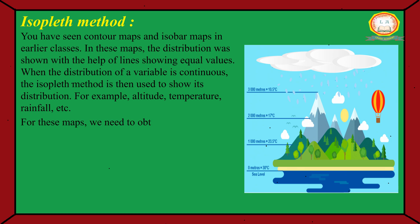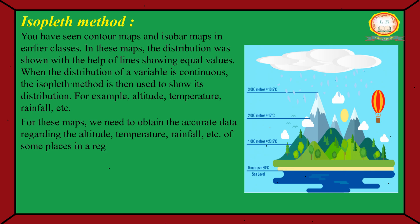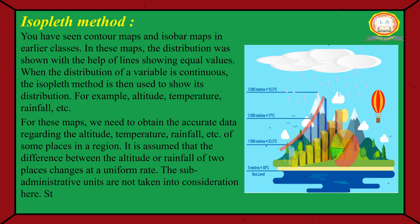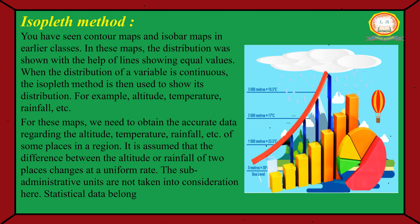For these maps, we need to obtain the accurate data regarding the altitude, temperature, rainfall, etc. of some places in a region. It is assumed that the difference between the altitude or rainfall of two places changes at a uniform rate. The sub-administrative units are not taken into consideration here. Statistical data belongs to the respective places. Such data is known as point-related data.